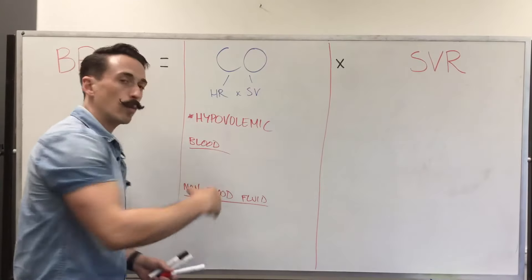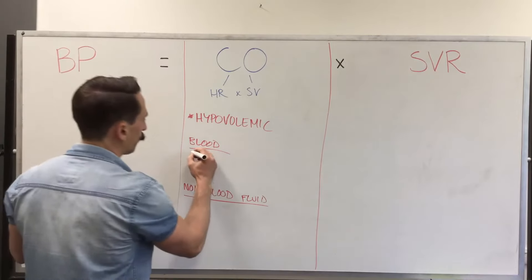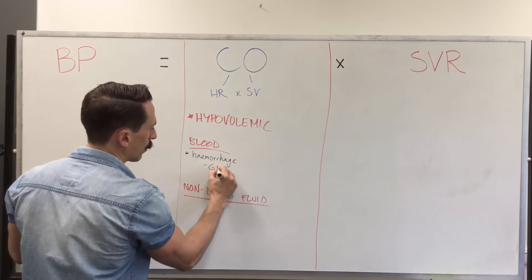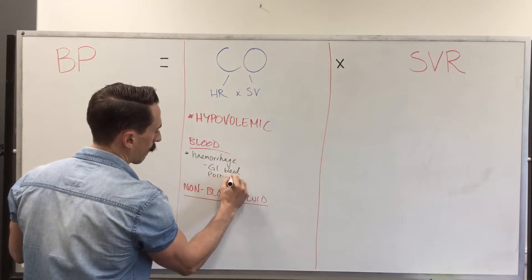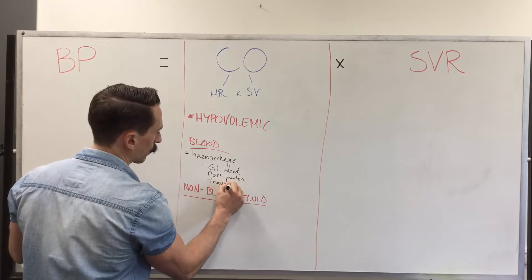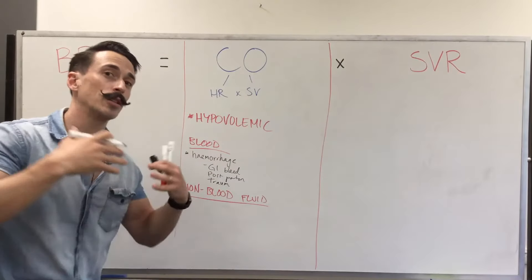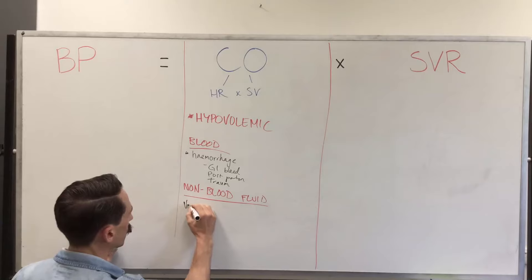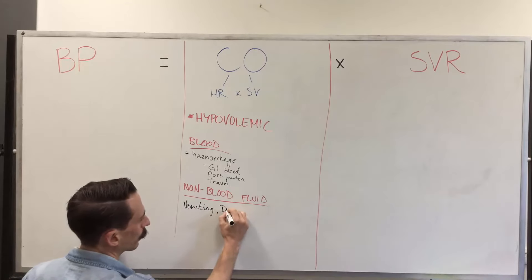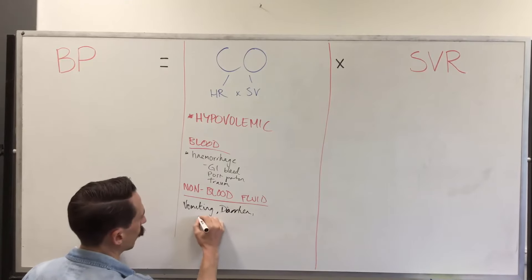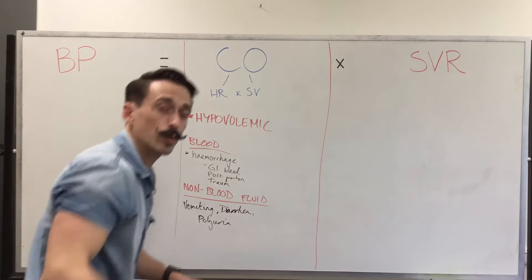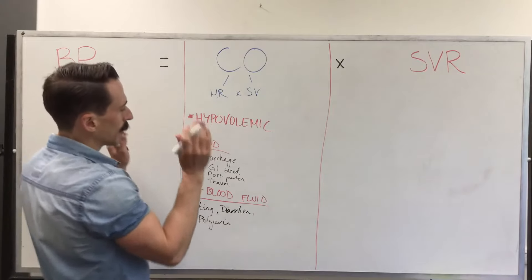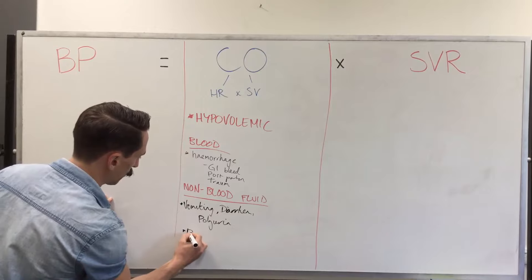Why would we reduce blood volume? Well, predominantly this can happen through hemorrhage — for example, a GI bleed, postpartum hemorrhage, trauma, or an abdominal aortic aneurysm. For non-blood fluid loss, you could lose fluid through vomiting, diarrhea, or polyuria — increased urination — which can happen with diabetics, where too much glucose pulls too much water into the urinary tract. Another important cause of non-blood fluid loss is burns.